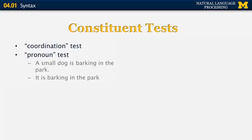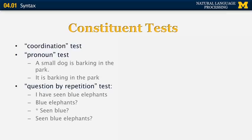There's also a constituent test called question by repetition. Suppose we have the sentence I have seen blue elephants, and we want to find the constituents. Is seen blue a constituent, or is blue elephants a constituent? Let's try this dialogue: I have seen blue elephants — Blue elephants? This sounds like a meaningful dialogue, so blue elephants is a constituent. But if I say seen blue? — that doesn't look like a plausible dialogue, so seen blue is not a constituent.